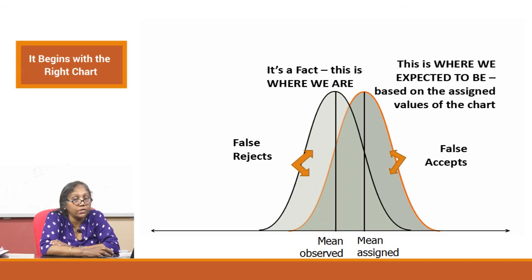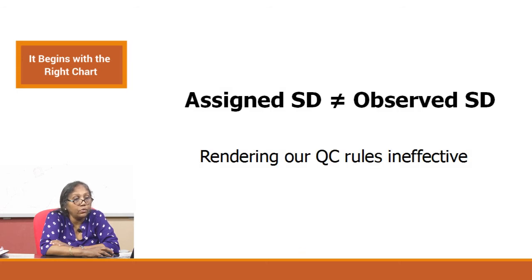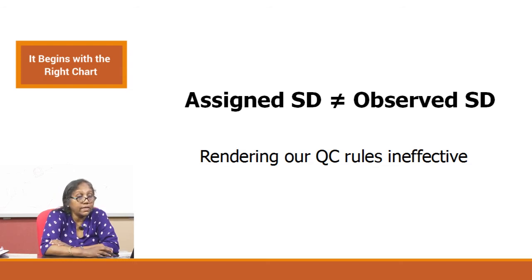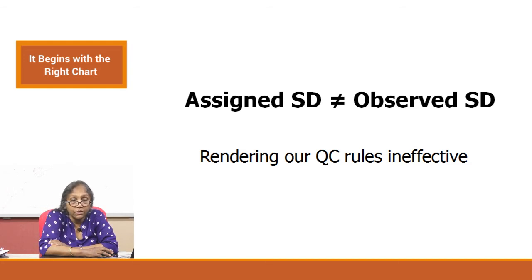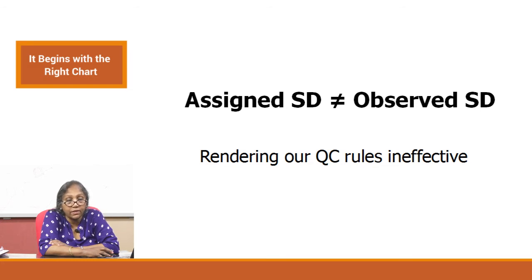Now let us look at the next scenario where your assigned SD is different from your observed SD — another reason how you render your QC rules ineffective. You know all the rules, you are running QCs at 2 or 3 levels, but you have not assigned your values correctly and everything is now meaningless.